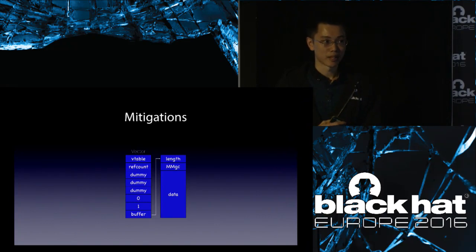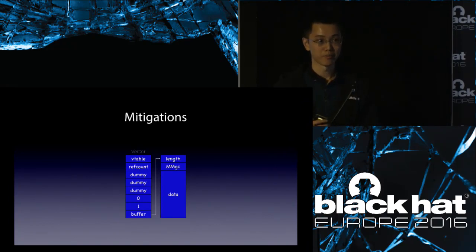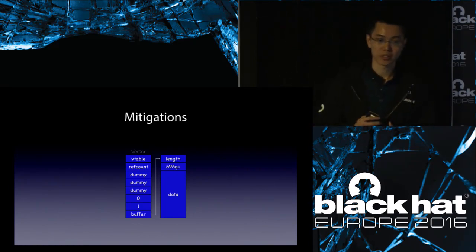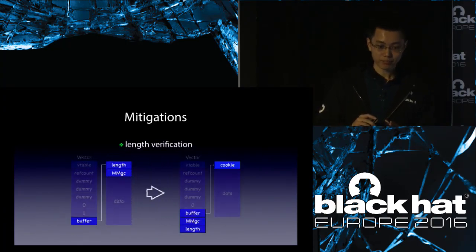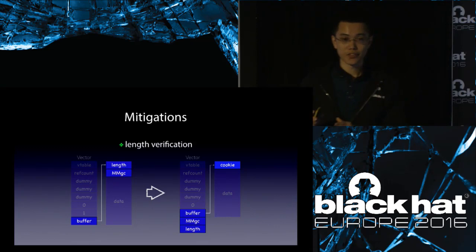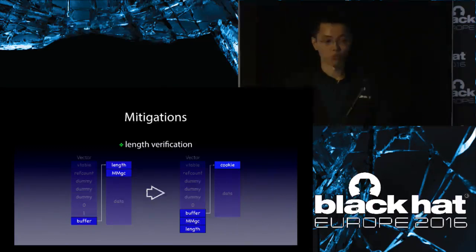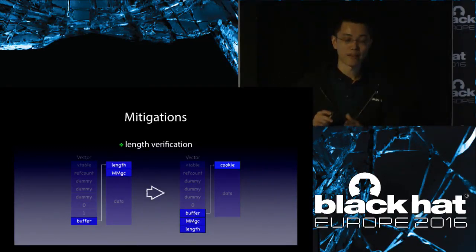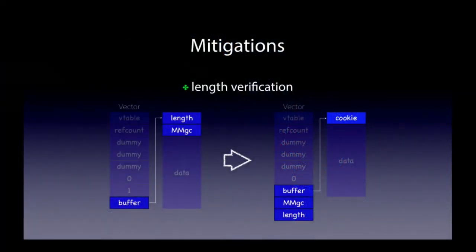So finally, last December, the popularity of the Hacking Team's Flash exploit played a major role in Adobe's final decision. Working with Google Project Zero, Adobe added mitigations to vector. After the mitigation, the length field is moved to the metadata part of the vector object, leaving only the verification field in the same position. Since the length field and the verification field are now in different memory blocks, corrupting them at the same time is not practical.